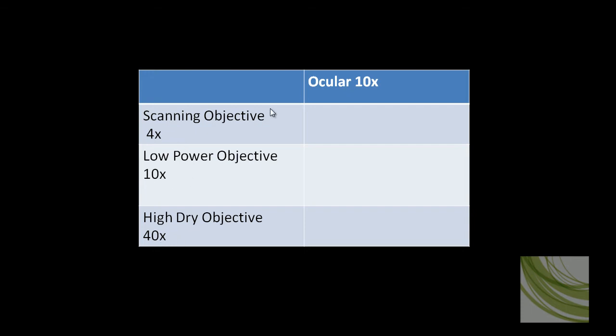We'll calculate by multiplying these two, and this column will be the total magnification. The first one we're going to look at is the scanning objective times the ocular, 10x, equals 40x total magnification. So when you're looking at something with the 4x objective, it looks 40 times larger than it actually is.